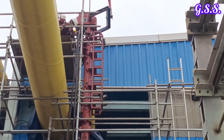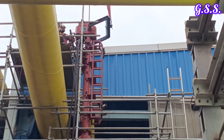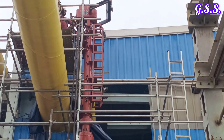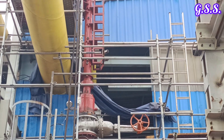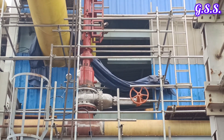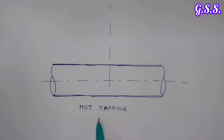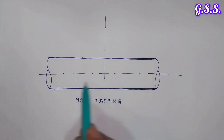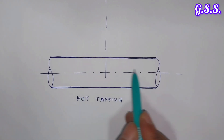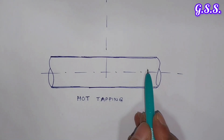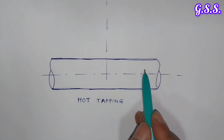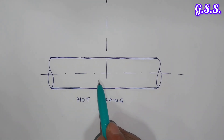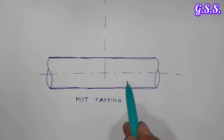This is hot tapping operation, or taking a branch connection from an operating pipeline without any shutdown. Hot tapping means online tapping from a running pipeline. Suppose this is one running charged pipeline and we cannot take any shutdown for taking a tapping on this pipeline. In that case, the only option is hot tapping.